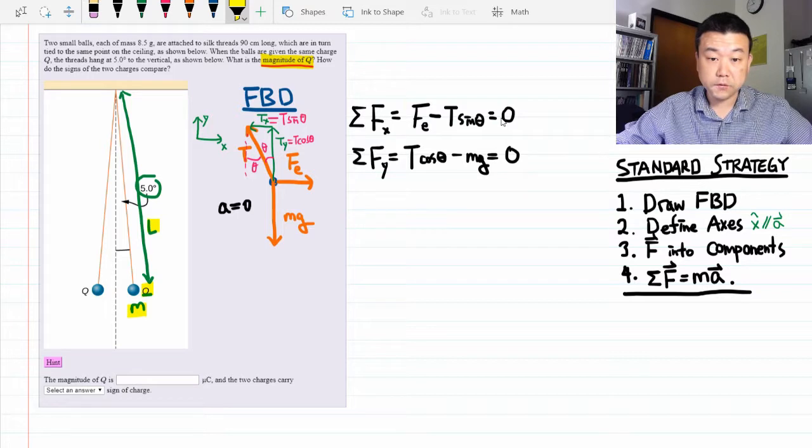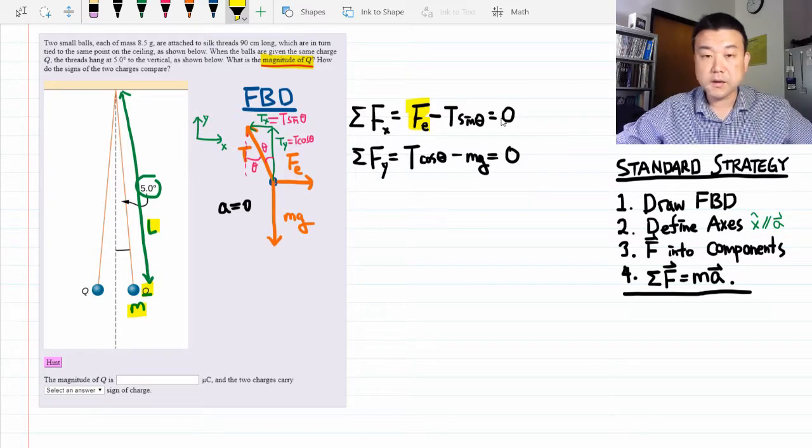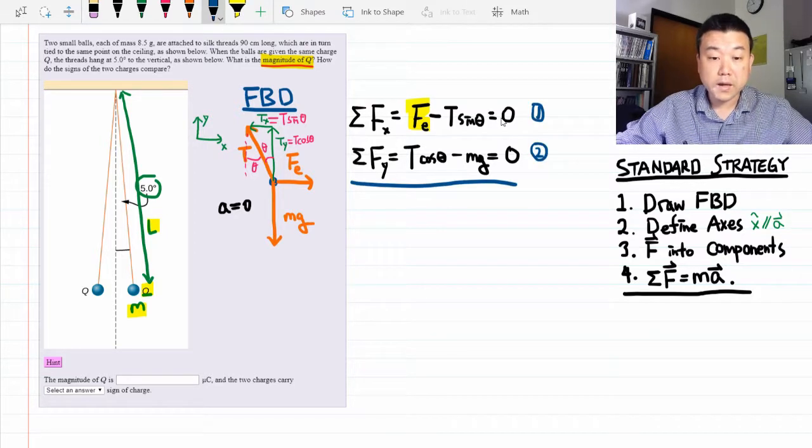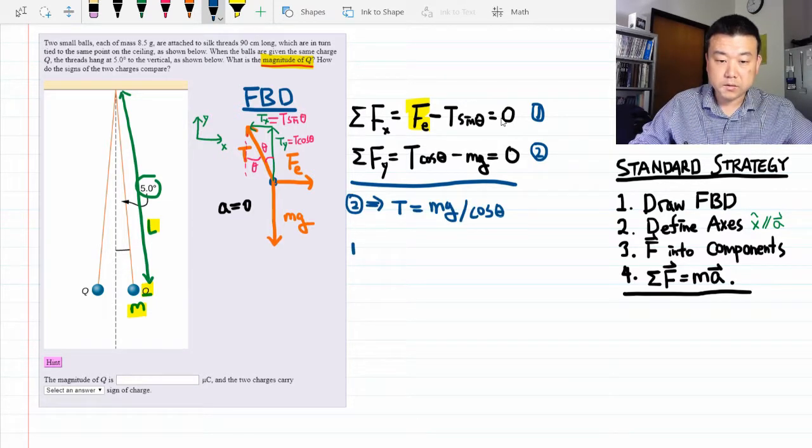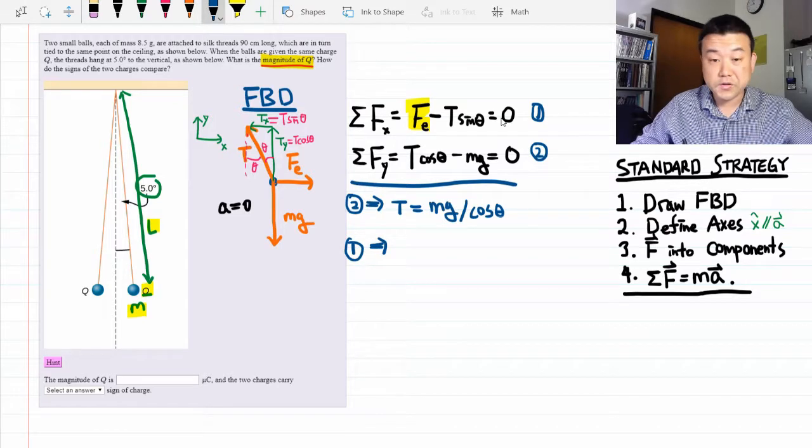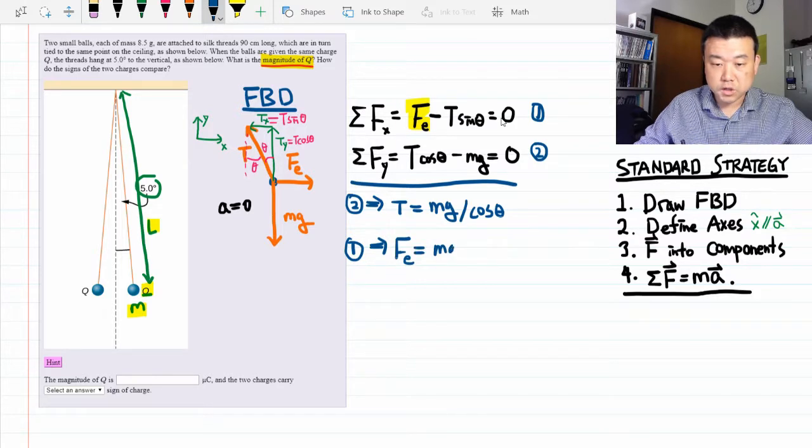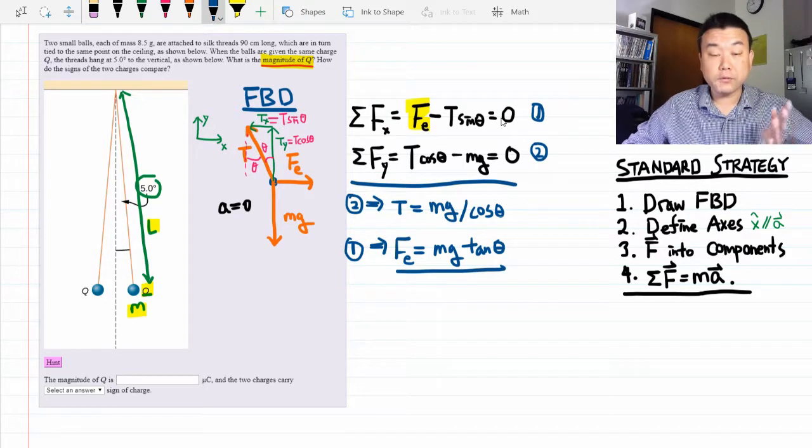So here we have all the information we need to solve for the electric force. So let's do that. We won't quite be done because the question is asking for the charge, but I think that's a good intermediate step. So I'm going to solve equation two for tension and then plug it into equation one to eliminate tension, and you get the electric force is mg tangent theta. And we have numerical values for every quantity here, so we can calculate what the electric force is.